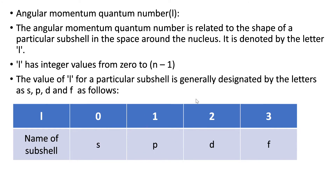Coming to the angular momentum quantum number, represented by the letter small l. It is related to the shape of a particular subshell in the space around the nucleus. The principal quantum number N is related to size and energy of the orbital, while the angular momentum quantum number l is related to the shape of the particular subshell.